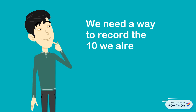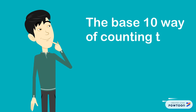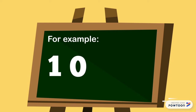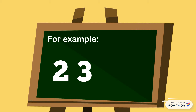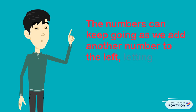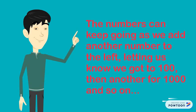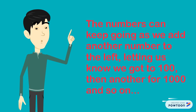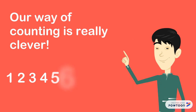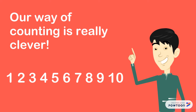We need a way to record the 10 we already got to. The base 10 way of counting tells us how many times we have started again. For example, the number 10 has a 1 on the left telling us we have got to 10 once. The number 11 tells us we have got to 10 once and have counted another finger, so the number 11 means one 10 and one 1. The number 23 means two 10s and one lot of 3. The numbers can keep going as we add another number to the left, letting us know we have got to 100, then another for 1000 and so on. Our way of counting is really clever — we use just 10 numbers to count any number. A written number is a code for adding up.